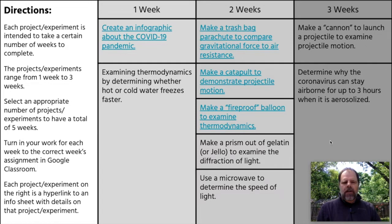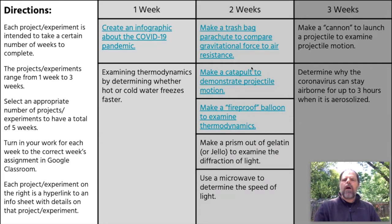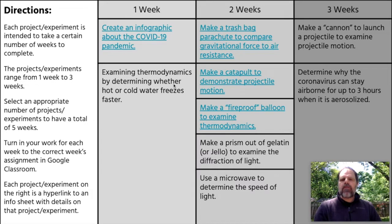You will turn in your work for each week to the correct assignment in Google Classroom, which we'll go over in more detail shortly. Each project or experiment in those columns is a hyperlink to an info sheet with details on that project or experiment. You can see the information in blue with an underline — those are hyperlinks. A few of these have not yet been converted into hyperlinks, as I don't have all the information compiled yet.